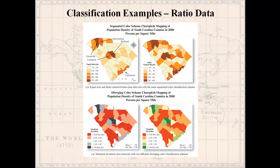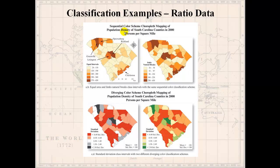Now let's look at numeric data — ratio data, where you can do all mathematical operations and there is a true zero. These maps show population density for South Carolina counties. The data has been standardized: instead of just using the raw number of persons per county, they divided the number of persons in each county by the area of that county, yielding a standardized population density — accounting for the fact that some counties are smaller and some are larger.